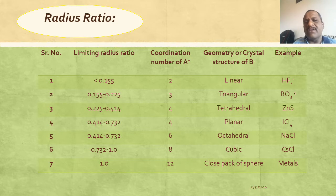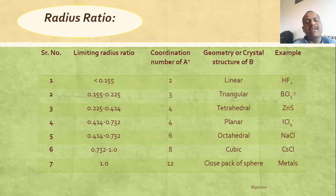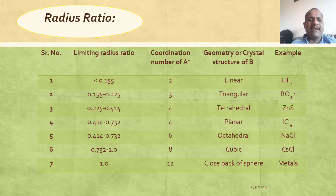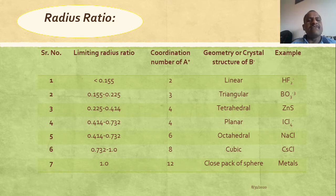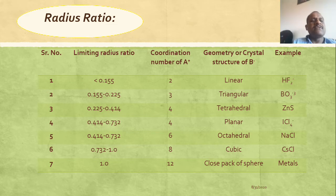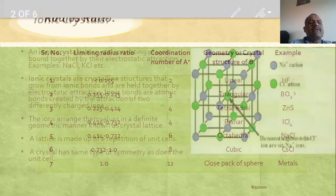Radius ratio is the ratio of the radius of the cation to the radius of the anion. Always remember that the size of the cation is less than the size of the anion. That is why the value is mostly less than 1 in the first three categories, which you have to keep in mind.